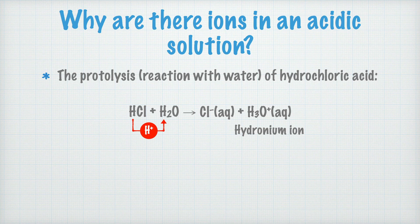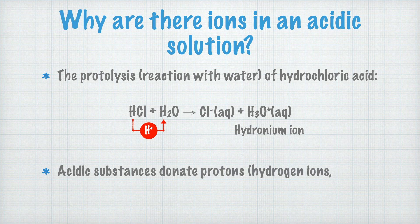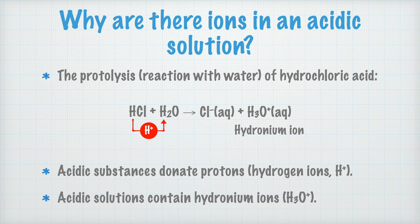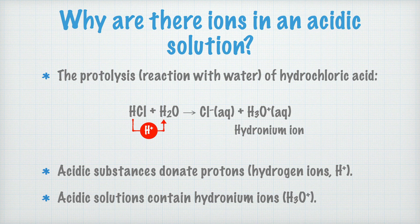To this, we now add two important definitions. Acidic substances, that is, substances that give off protons, that is, hydrogen ions. An acidic solution, then, is a solution where there is a high concentration of hydronium ions. That is an important difference. An acidic substance is not quite the same thing as an acidic solution.